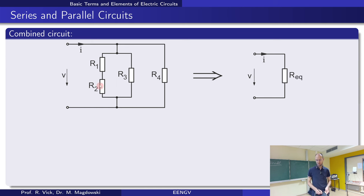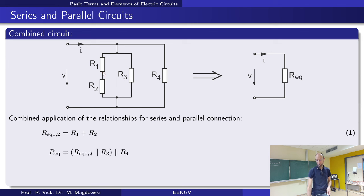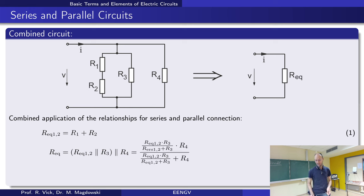R1 and R2 are in series, so we calculate an equivalent resistance there. Then that sum with R3 is in parallel, and the last one also in parallel. So we combine this step by step: take the sum of R1 and R2, then take that in parallel with R3, and then the remaining result in parallel with R4. If you write this down and insert everything, the equation gets longer and longer, and you can try to simplify it a little bit.